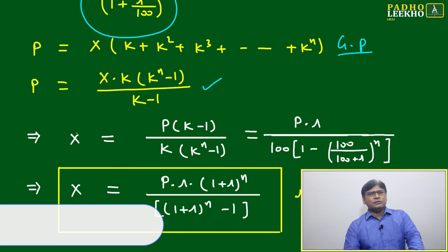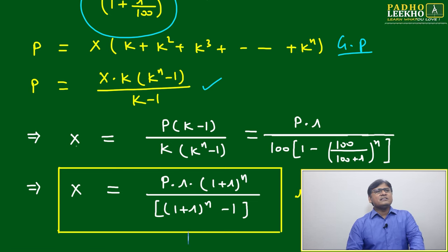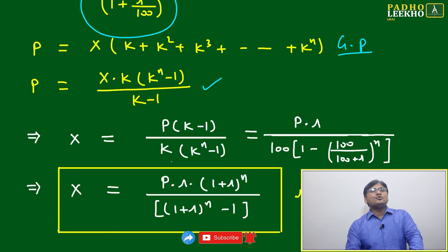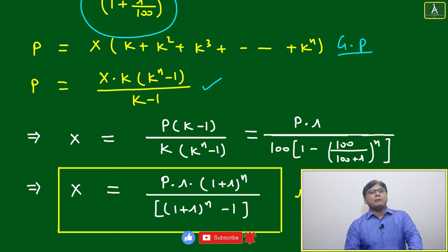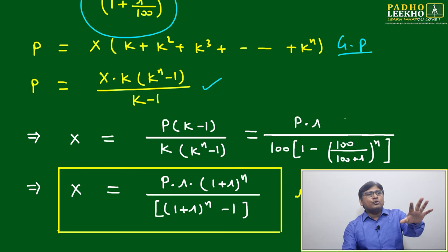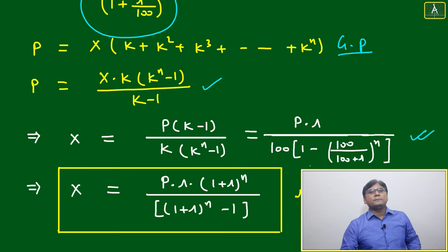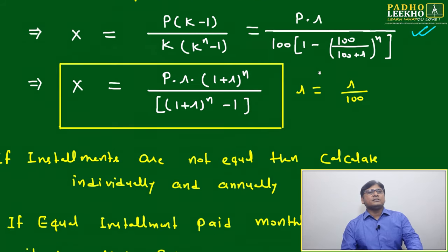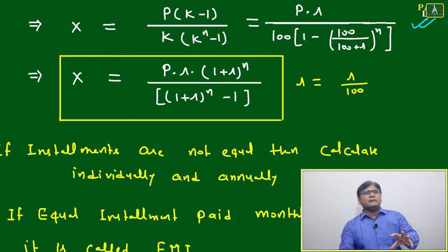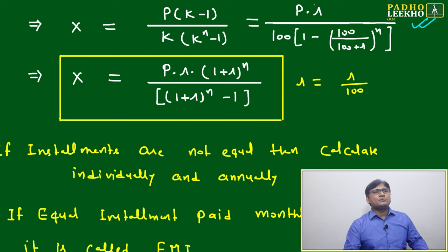The sum of the GP (k + k² + ... + kⁿ) uses the formula: k·(kⁿ - 1)/(k - 1). Substituting back, we get P = x · [k/(1 - k)] · [1 - kⁿ]. Then putting k = 1/(1 + r/100) back gives: P · (r/100) divided by [1 - (1 + r/100)^(-n)].